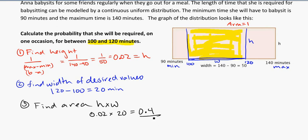So the probability that she works between 100 and 120 minutes on a night working for these people is 0.4.